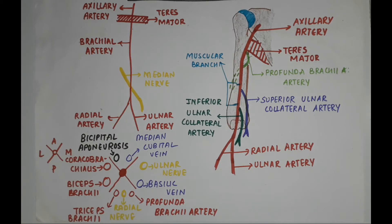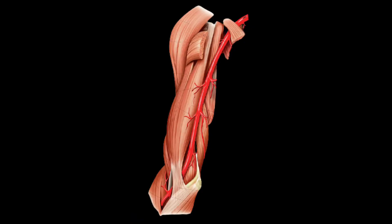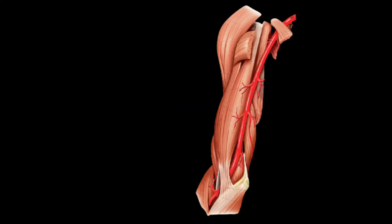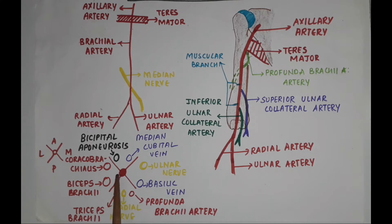Anteriorly to the brachial artery, in front of the elbow, we have the bicipital aponeurosis and the median cubital vein. The bicipital aponeurosis covers the brachial artery at the elbow.